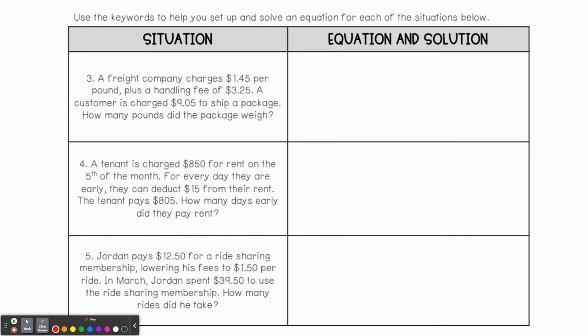A freight company charges $1.45 per pound plus a handling fee of $3.25. A customer is charged $9.05 to ship a package. How many pounds did the package weigh? First off, we talked about some terms that we use for multiplying. If you look back, we saw the word per. This one stood out to me right away. $1.45 per pound means $1.45 is being multiplied by a number. So since we're talking about pounds for the package, let's go ahead and put $1.45 and we're going to write the letter P. $1.45P plus, what does that mean? That means we're adding, plus a handling fee of $3.25. That is what we call a constant. So plus $3.25. A customer is charged, so is charged means equals $9.05.